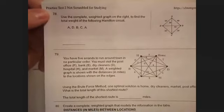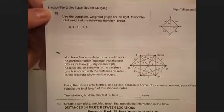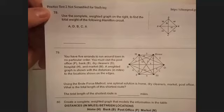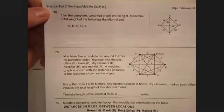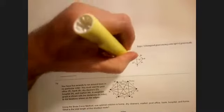It's kind of hard to see. These numbers are small, but yeah, that edge is 6. Use the complete weighted graph to find the total weight of this Hamilton circuit. You can pause it and try it yourself. I'm about to work it out. I'm going to go from A to D to B to E to C to A.